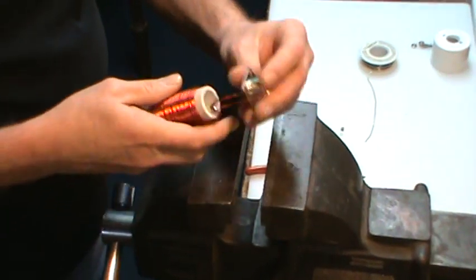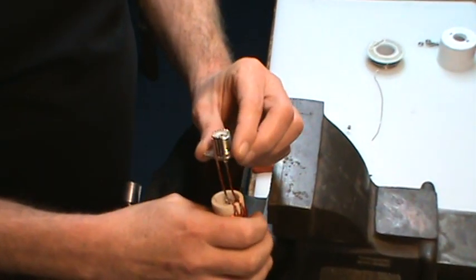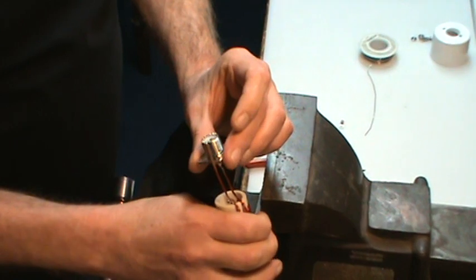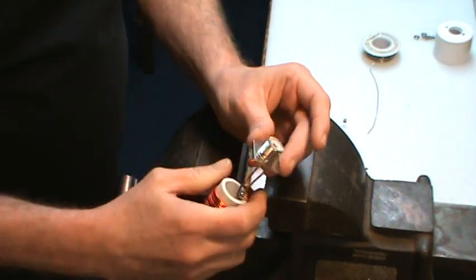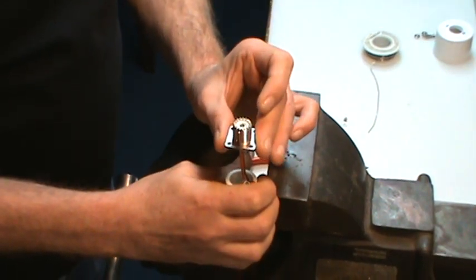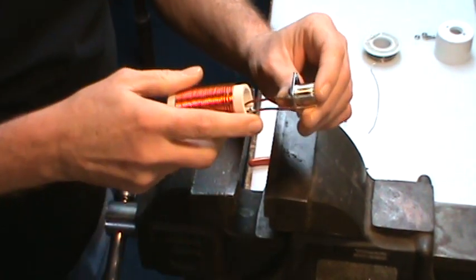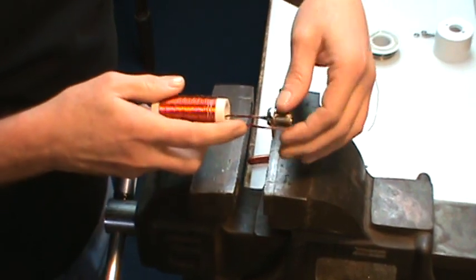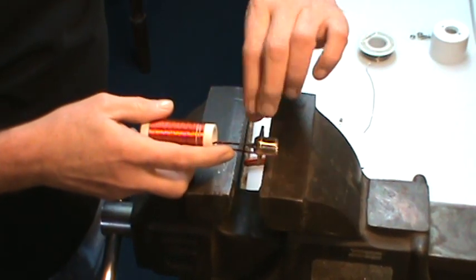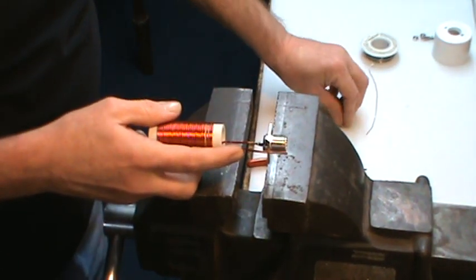On the other lead, first off you want to eyeball it and kind of center the SO239 connector over the center of the form. And this lead, I'm just going to bend over at a 90 degree angle.